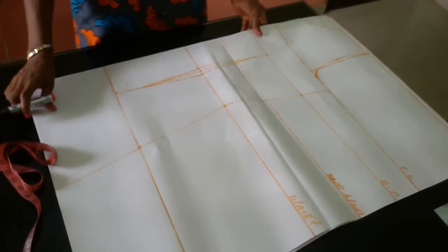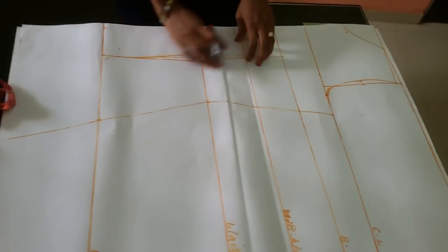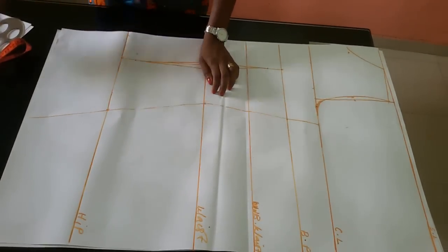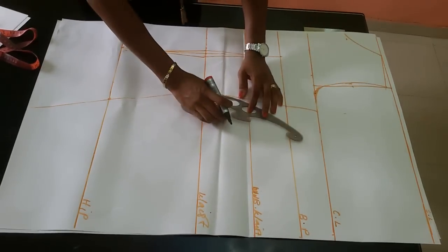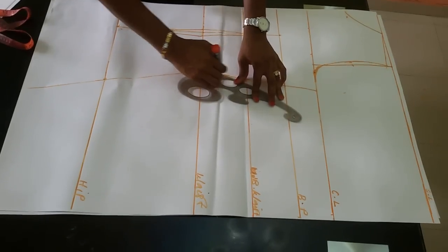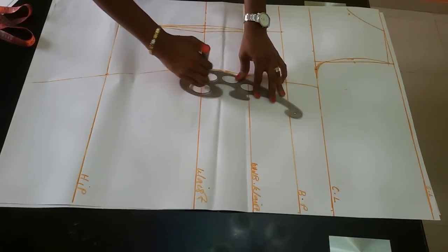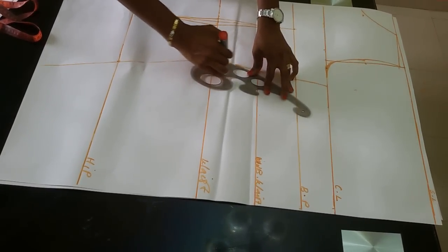You can just extend it down. Note that this part is not really sharp — it curves a little bit like this. Now I'm going to be cutting it out.